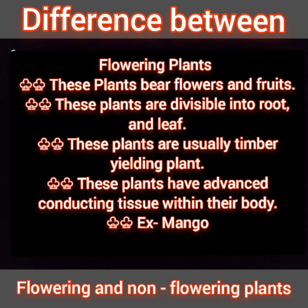Flowering plants: these plants bear flowers and fruits. These plants are divisible into root, stem, and leaf. These plants are usually timber-yielding plants. These plants have advanced conducting tissue within their body. Example: mango.